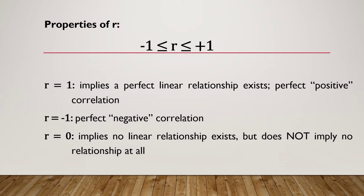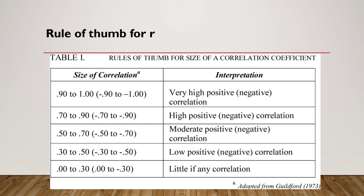So r equal to zero does not imply that there is no relationship between the two variables. As a rule of thumb for r: a correlation of 0.9 to 1.0 (or negative 0.9 to negative 1.0) means very high positive or negative correlation; 0.7 to 0.9 is high; 0.5 to 0.7 is moderate; 0.3 to 0.5 is low; and 0 to 0.3 is little if any correlation.